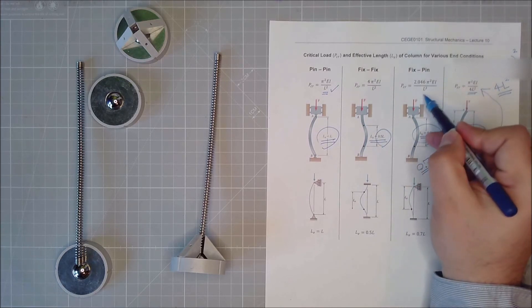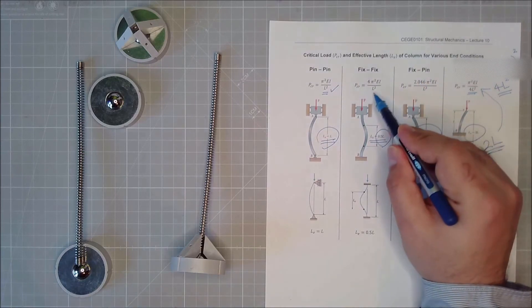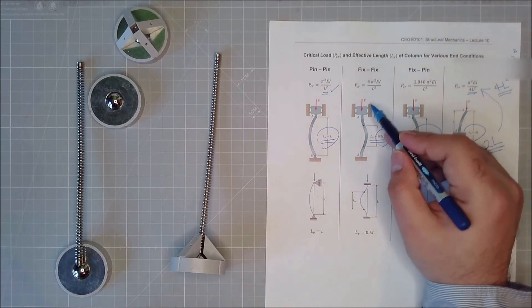The same thing happens here, 0.7L goes to the power of 2, we bring it up, as well as here, half to the power of 2, and it goes up.